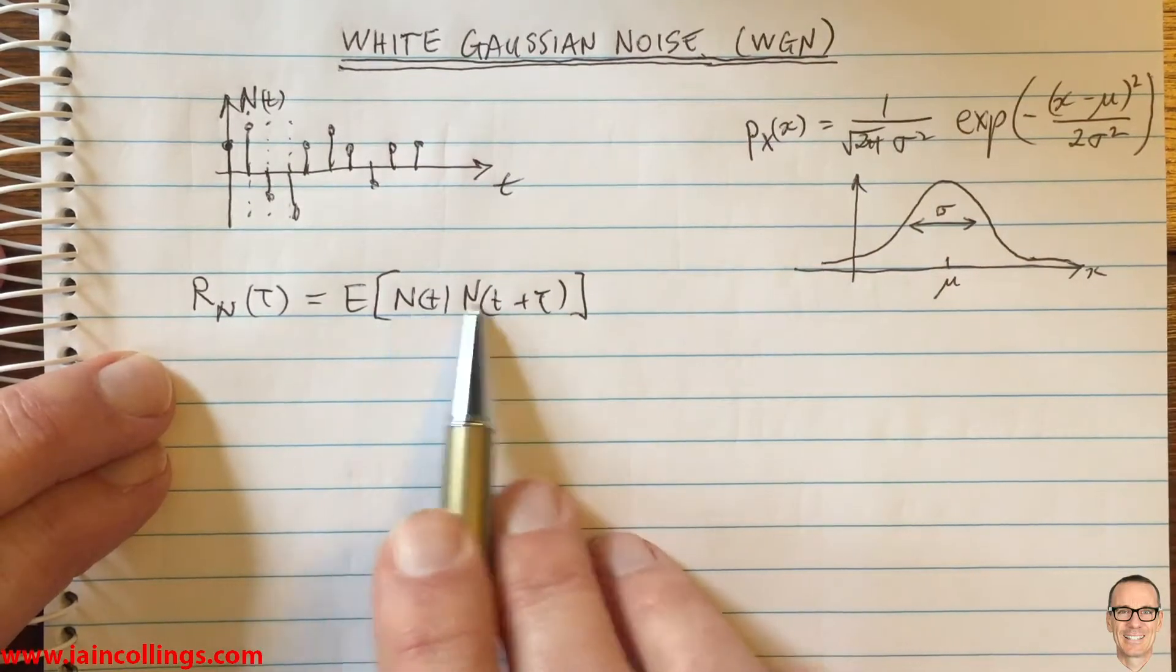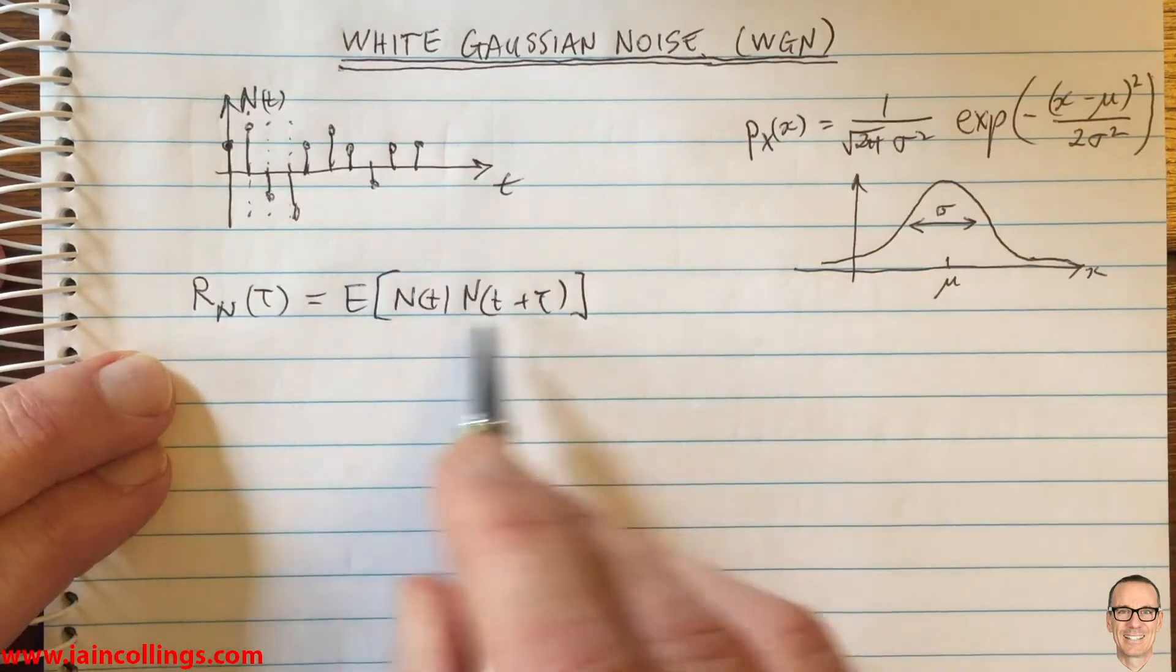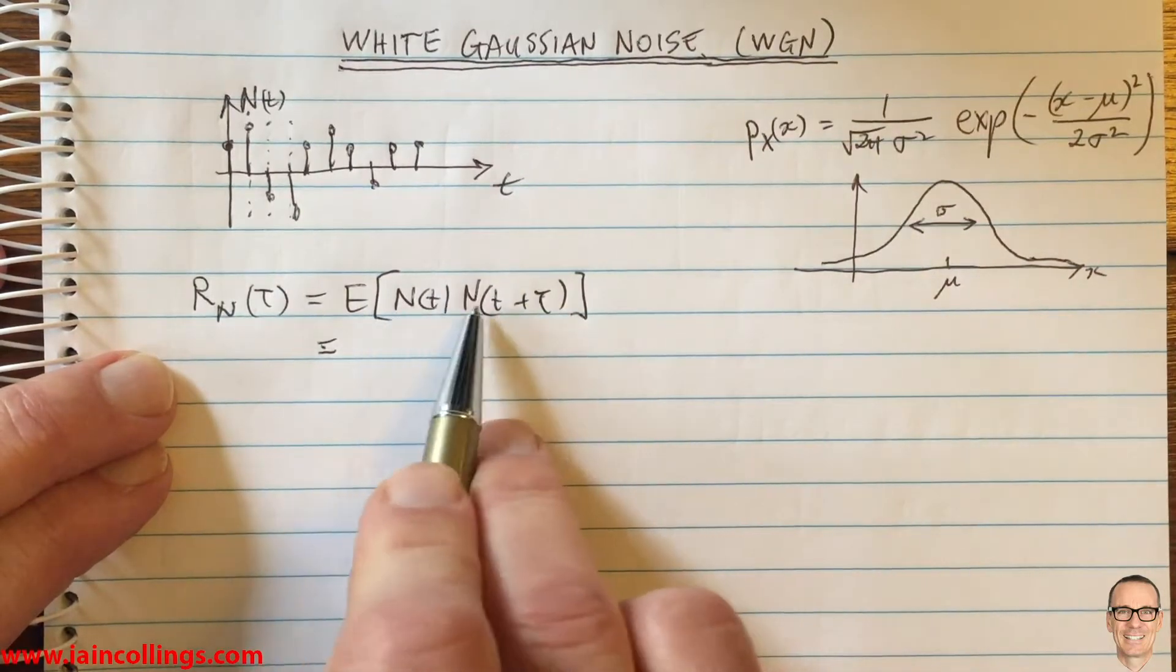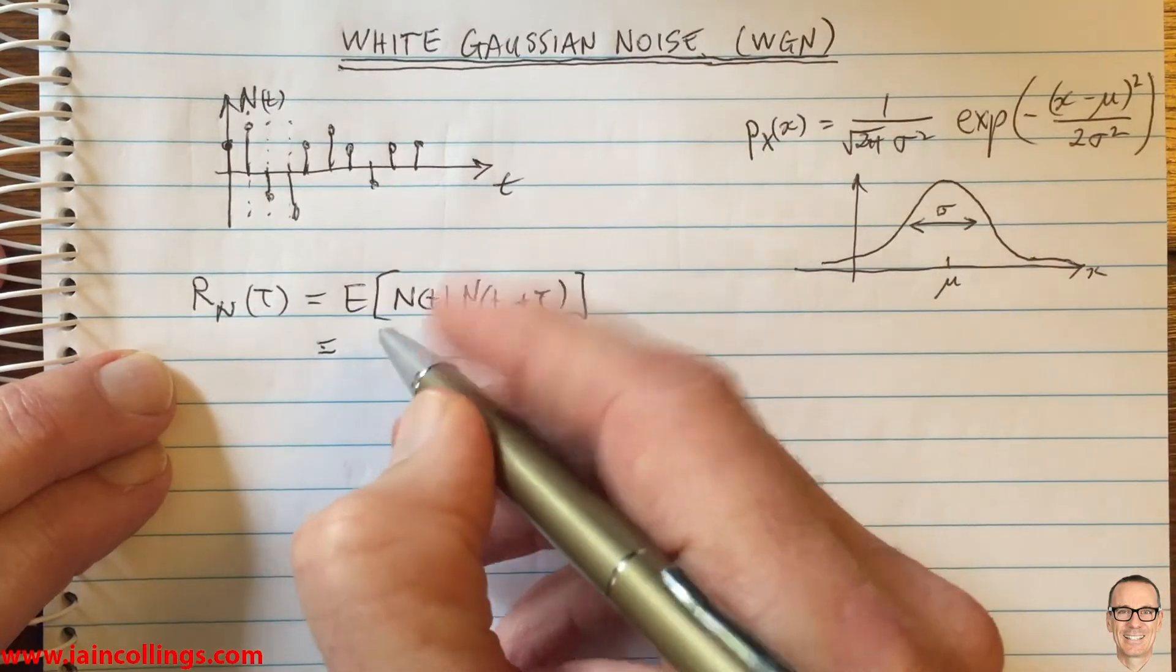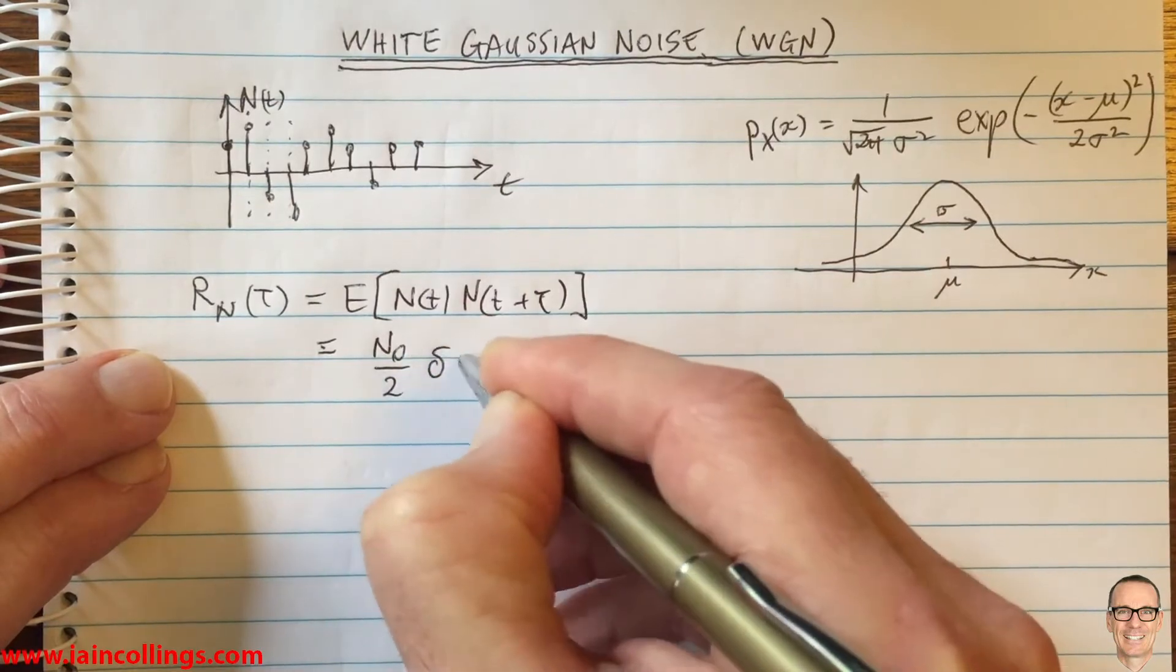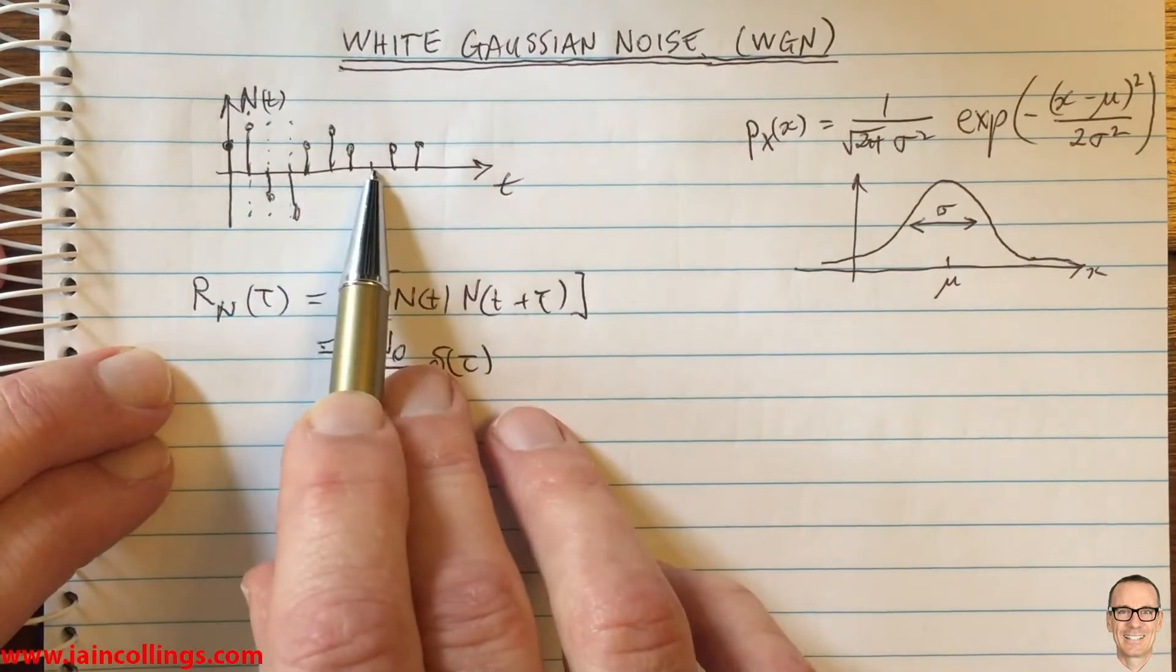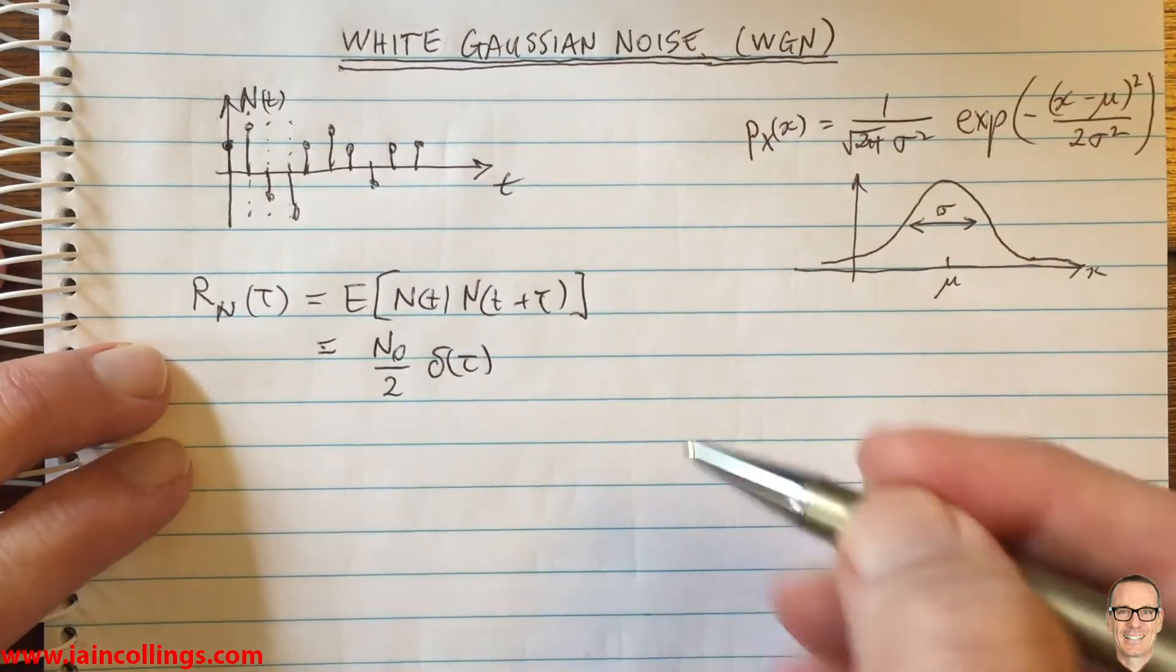When these are independent random variables, which is what it is for noise, then this is going to equal a delta function. Because if they're independent and they're zero mean, then we're going to have a delta function as the autocorrelation function. They're not related to each other at different times. That's because they're independent - they're independent because they're noise.